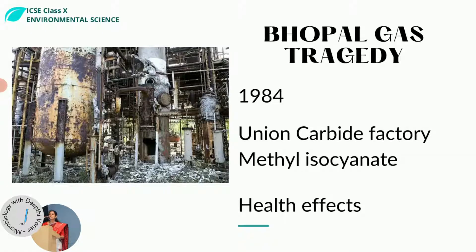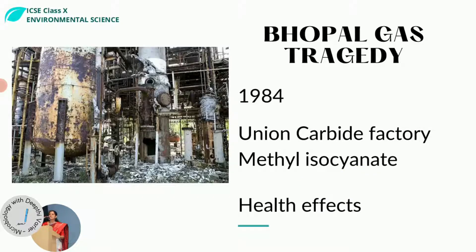At the Union Carbide factory, a gas called methyl isocyanate leaked out — more than 42 tons of the gas was released because the entire plant exploded. More than 25,000 people died immediately. There were also long-term health effects from inhalation of toxic gases: birth defects in children, eye irritation and eye problems, choking and respiratory difficulties in survivors. It also contaminated soil and water over a very large area.